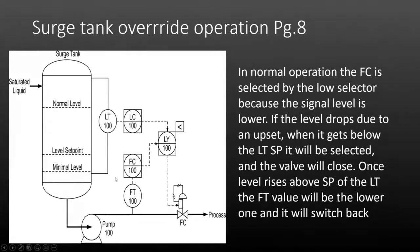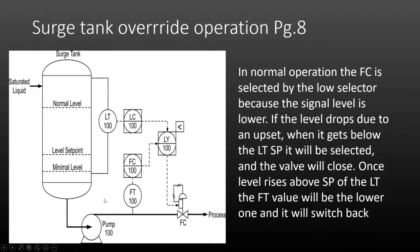In normal operation, the flow controller is selected by the low selector because its signal is generally lower most of the time. If the level drops below its set point due to an upset in the feed rate — say the flow signal is at 50% and the level drops to 25% — it's going to switch control over to the level controller until the level comes back up. Once the level rises to say 70%, it'll switch back to the flow controller.